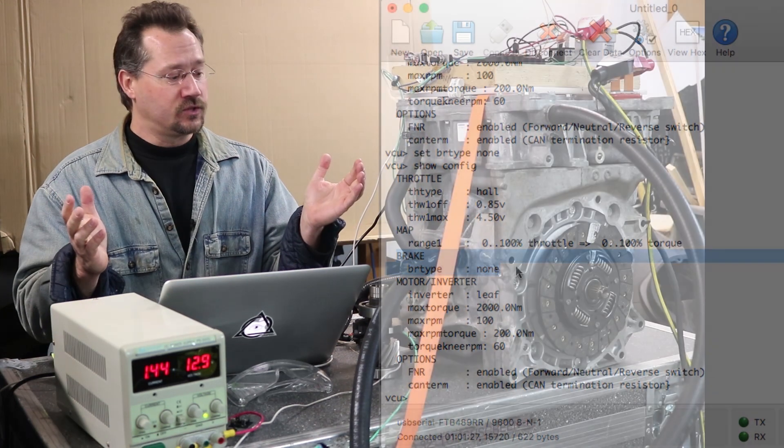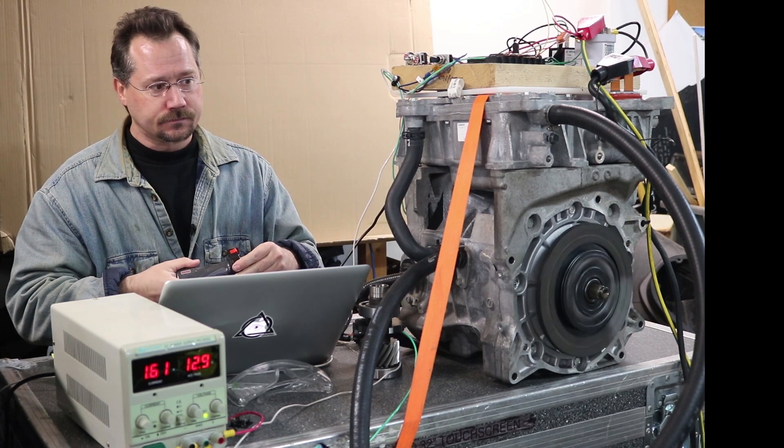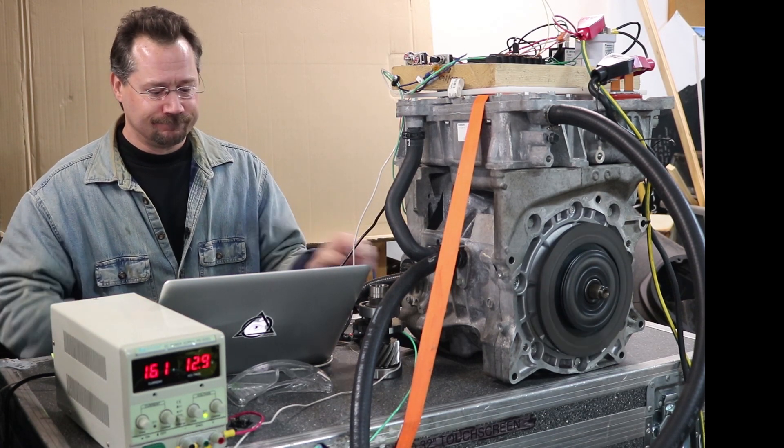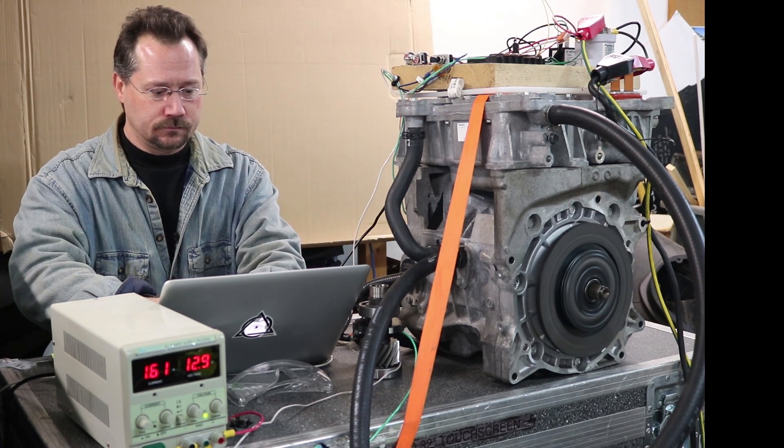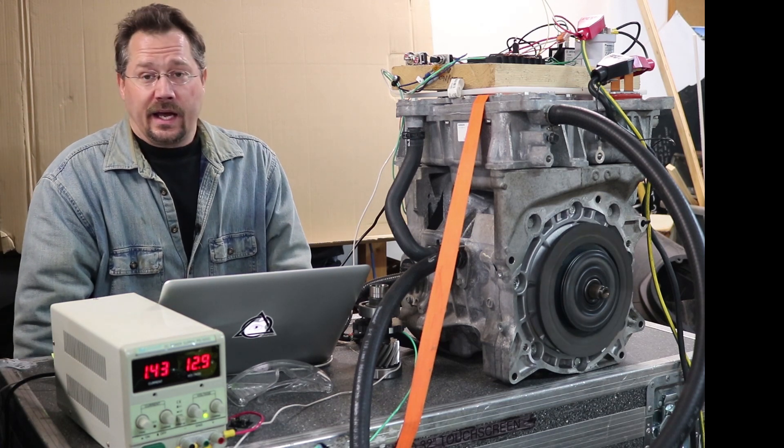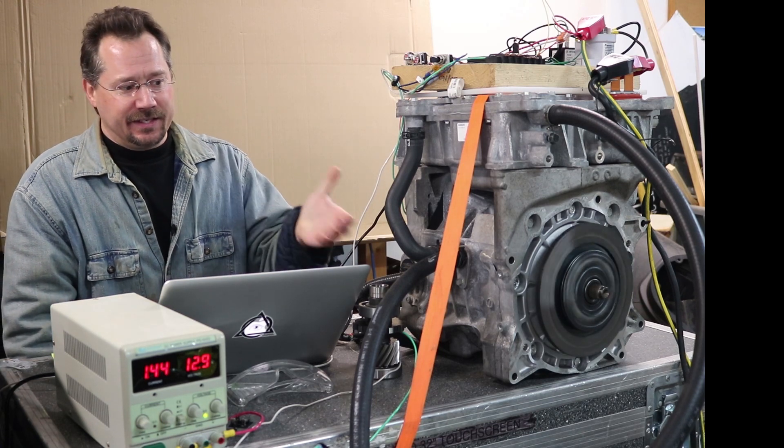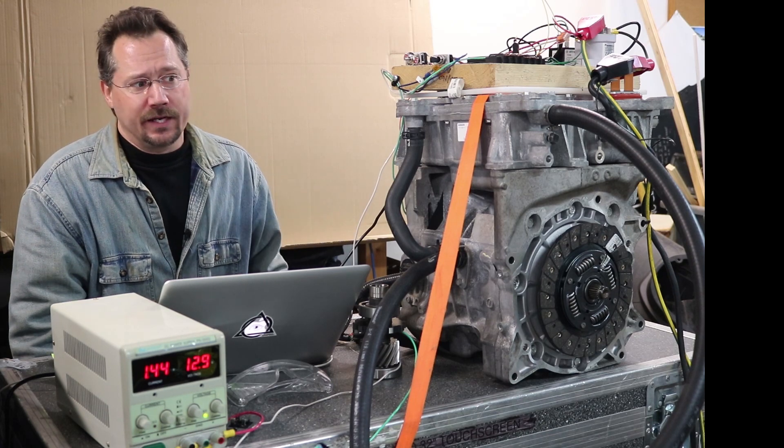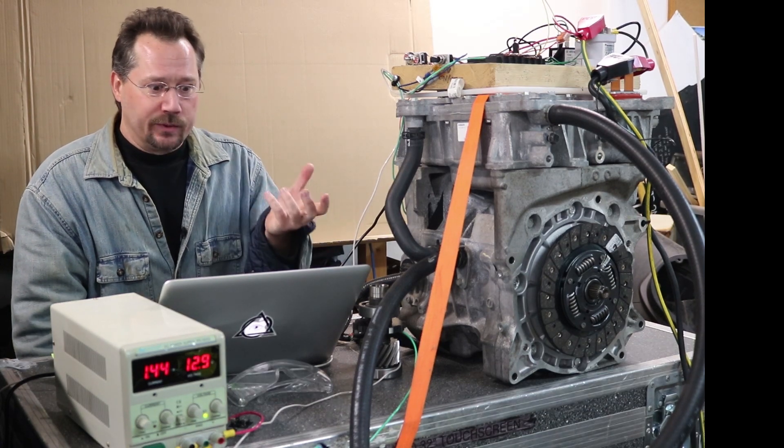So at this point we've got no regen whatsoever and actually with this on if I spin this, certainly I don't have any regenerative braking and it seemed as though the throttle was still applied when I let off and I think what's happening here is it's just not getting the proper feedback because there's literally no load on it.